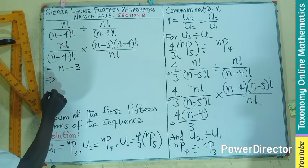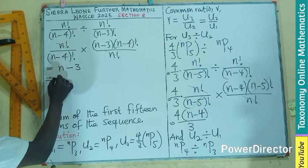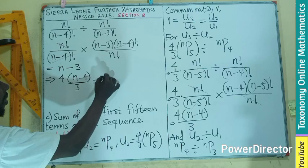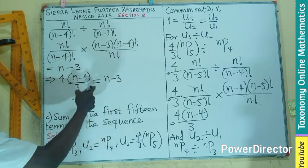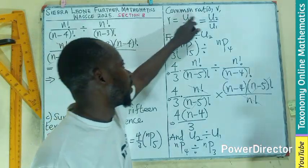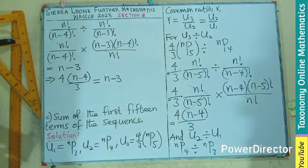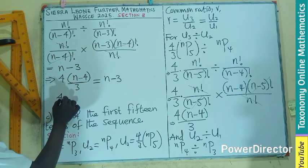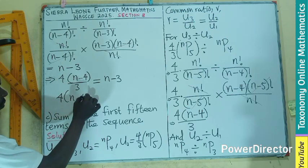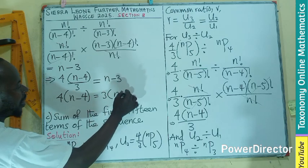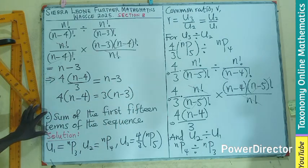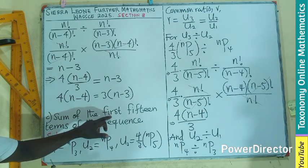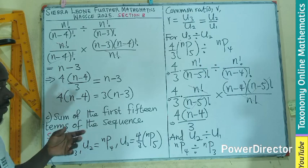The first one we have, which is 4 into brackets n minus 4 divided by 3, is the same as n minus 3 from here. There are two ratios, two common ratios. They all define the common ratio. So we are going to cross multiply or multiply through by 3. So it will become 4 times n minus 4 equals 3 times n minus 3. I leave this one here because that is the one we have to find last. We have to find the sum of the first 15 terms of the sequence.